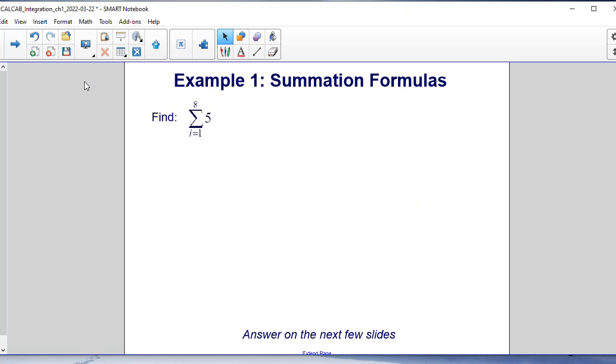Our first example of summation formulas: we are going to find the sum of 5 where i increments from starting at 1 going up to 8. So our first example we're going to use the formula, sum from i equals 1 to n of c is equal to c times n.